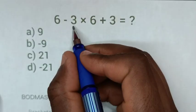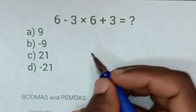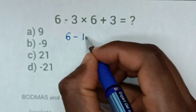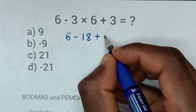So, from our problem, 3 times 6 is 18. So, it will be 6, then minus 18, then plus 3.